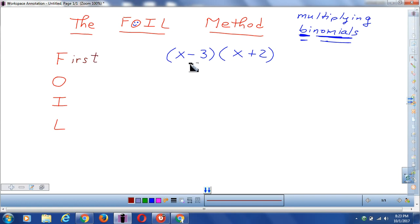So the first, the F in FOIL stands for first, and that means you're going to multiply the x and the x, because those are the first pieces for the binomial. So that piece would give you x squared. x times x is x squared.